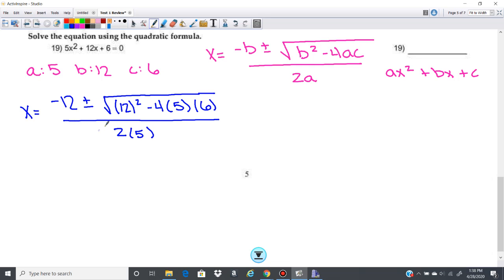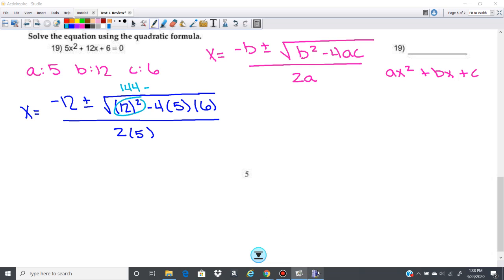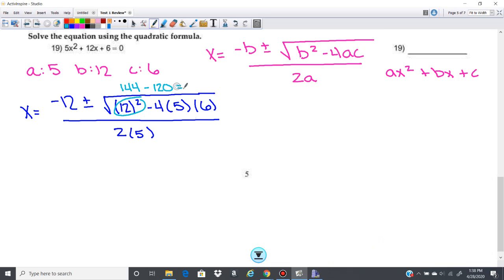So let's simplify inside of this, so 12 squared is 144, and I'm doing minus 4 times 5 times 6, which is 120. So 144 minus 120 is going to give me 24,